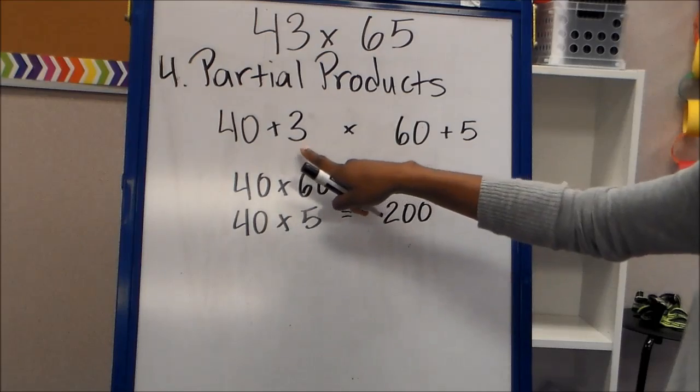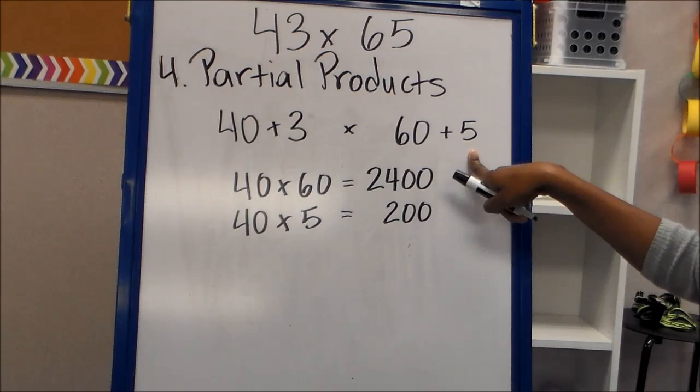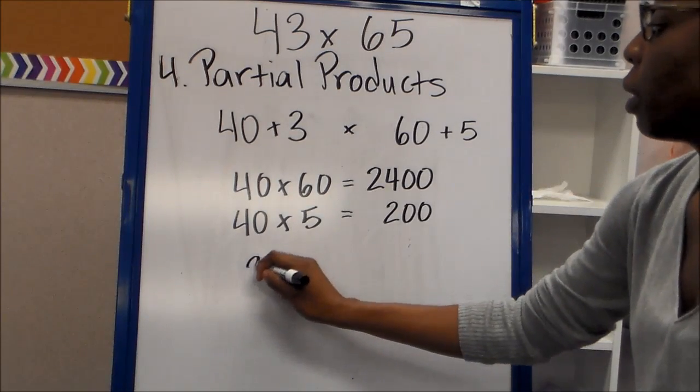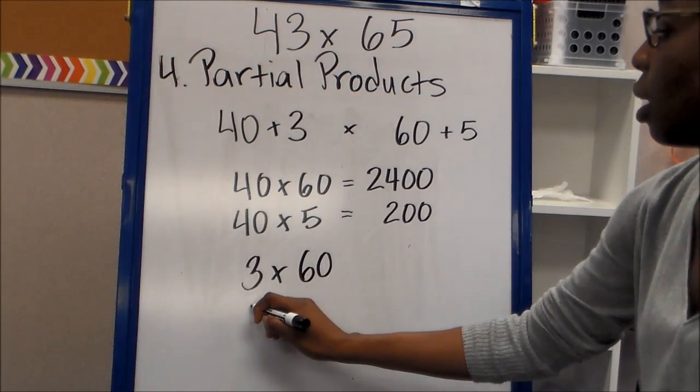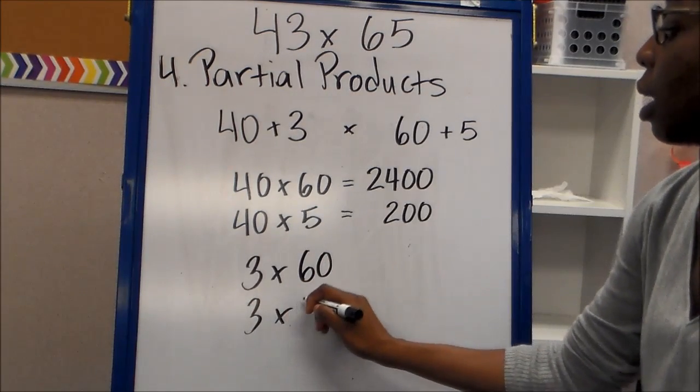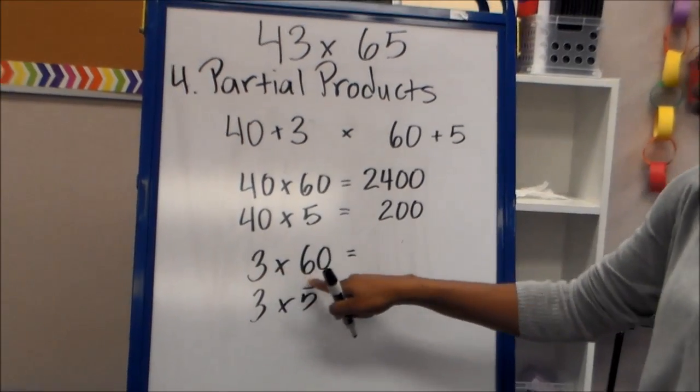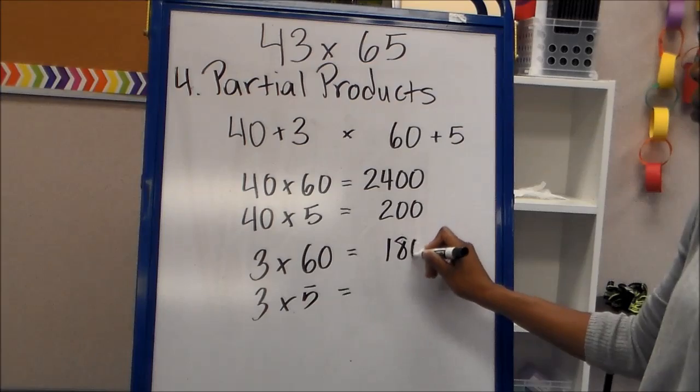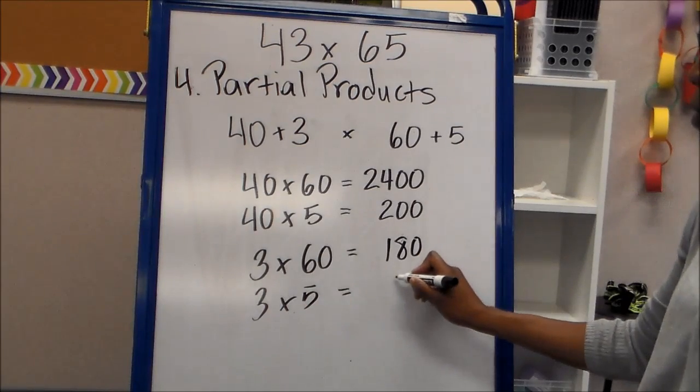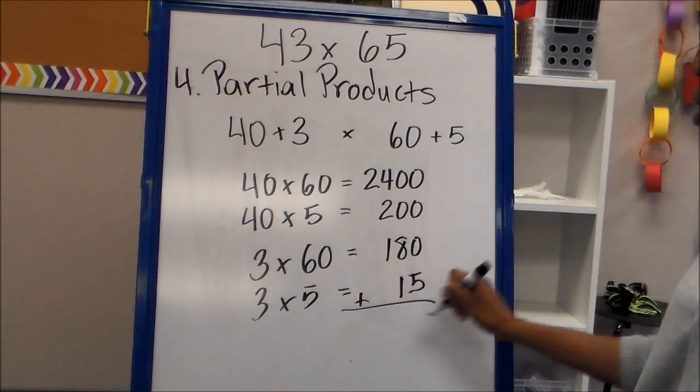Then you're going to multiply your other factor by the factors in the second number. So you have 3 times 60, and 3 times 5. And you're going to add them all together. 3 times 6 is 18, and you add another zero. 3 times 5 is 15, and then you add them all up together.